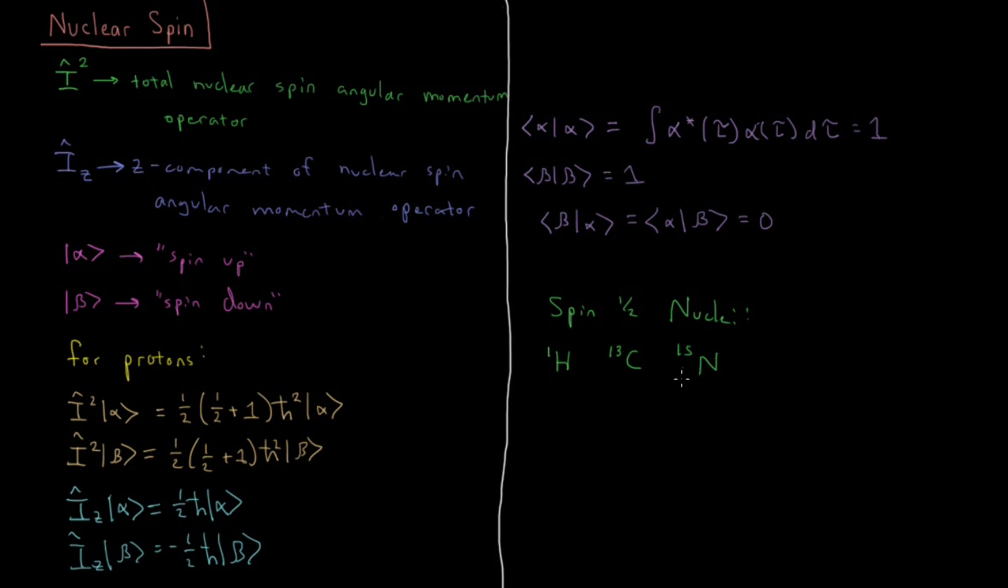Nitrogen-15, less common but widely done in 3D NMR on proteins. You can also do fluorine-19, phosphorus-31, and there are many others.